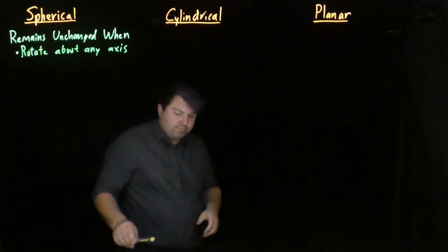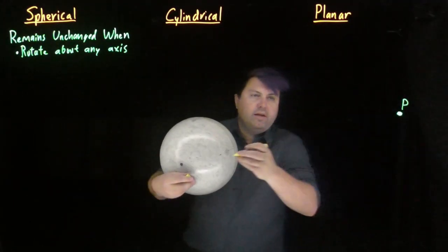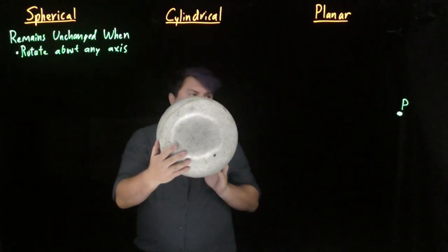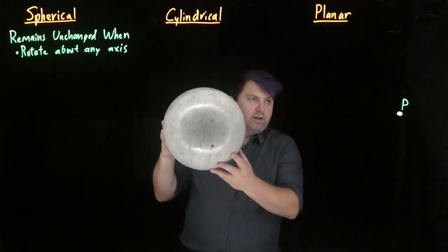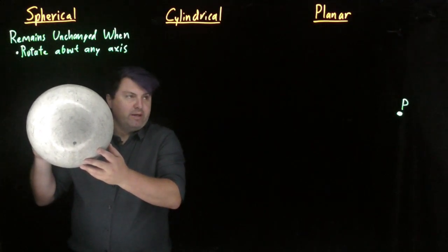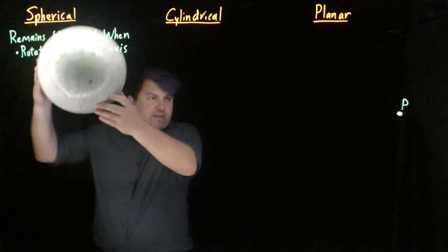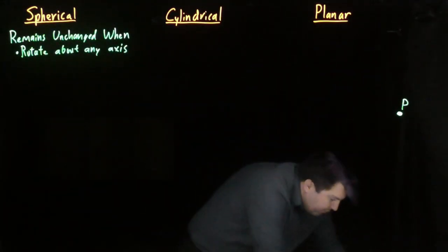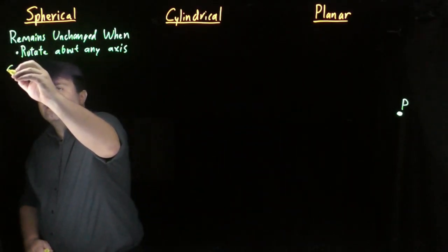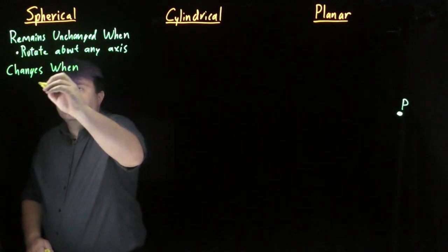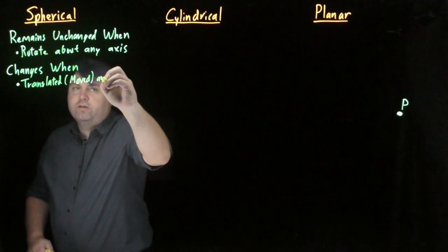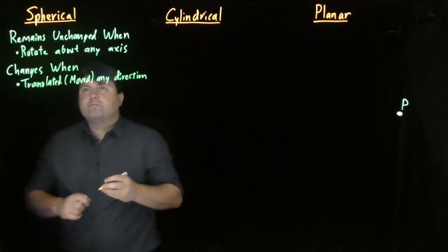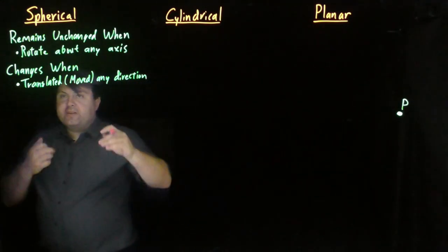I can rotate a sphere however I want. If I'm talking about the charge or force felt at a point P, rotating the sphere won't affect what electric field P feels because the sphere looks exactly the same to P. But if I move this sphere, it will produce a different field at P — a different distance, different direction. So it remains unchanged when rotated, but the field changes when it is translated, meaning moved, in any direction. These are our tests for spherical symmetry.